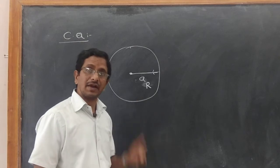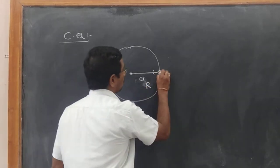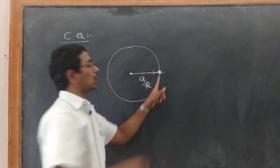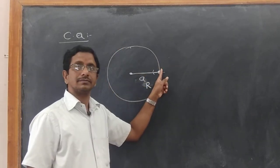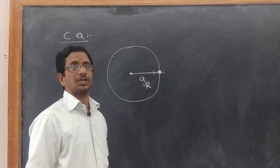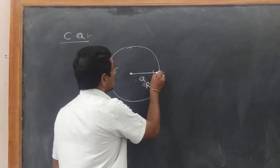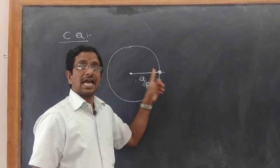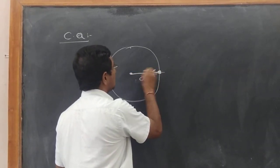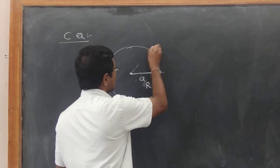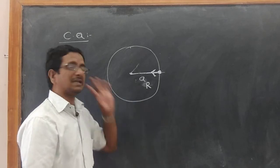Once again, centripetal acceleration can be defined as: it is an acceleration acting on an object undergoing uniform circular motion, and it is called centripetal acceleration.